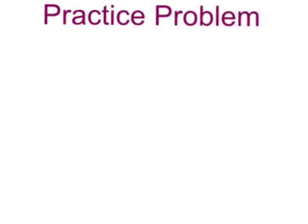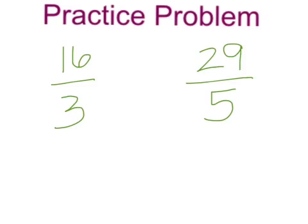Here is your practice problem of the day. Change these two improper fractions, 16/3 and 29/5, into mixed numbers. Don't forget to divide the numerator by the denominator, put the remainder as the new numerator, and use the original denominator in your answer. Good luck!